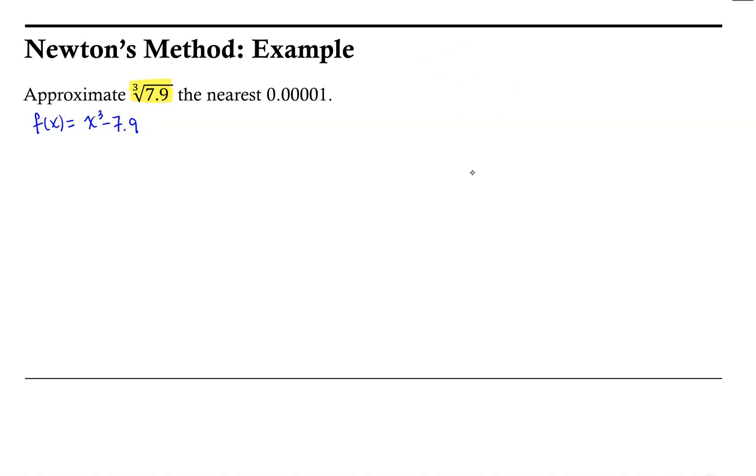So in setting up Newton's method, we'll go ahead and create a table. Our headers will keep track of the iteration, the x value at that iteration, what the function is for that x value (x_n cubed minus 7.9), the derivative at that x value. And f prime of x in this case would be 3x squared, so our derivative at x_n would be 3 times x_n squared.